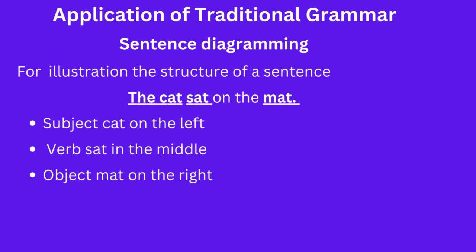One application of traditional grammar is sentence diagramming. It often uses sentence diagrams to illustrate the structure of a sentence. For example, a simple sentence like 'The cat sat on the mat' might be diagrammed with the subject 'cat' on the left, the verb 'sat' in the middle, and the object 'mat' on the right side of the diagram.